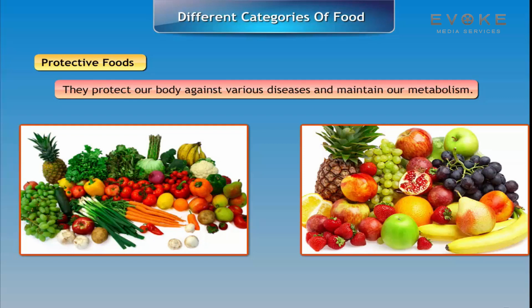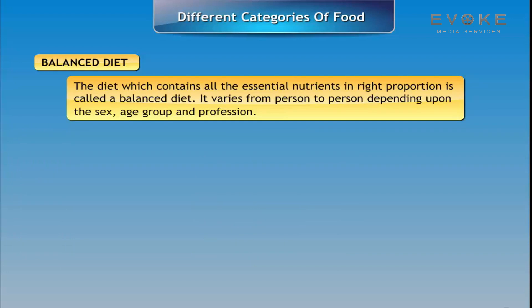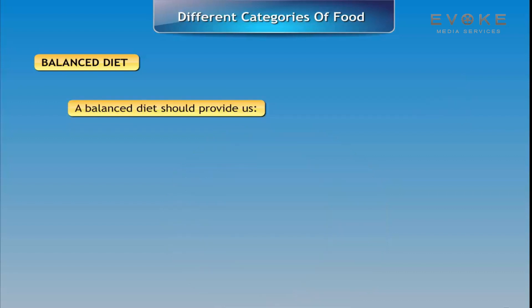A balanced diet is the diet which contains all the essential nutrients in the right proportion. It varies from person to person depending upon sex, age group, and profession. A balanced diet should provide us the energy required by our body.